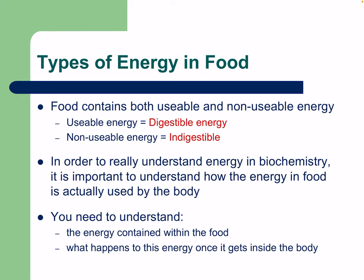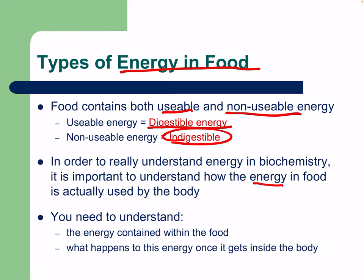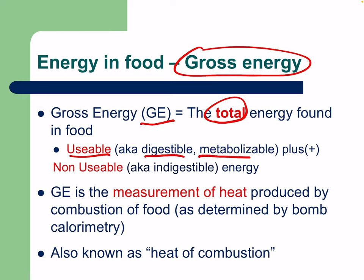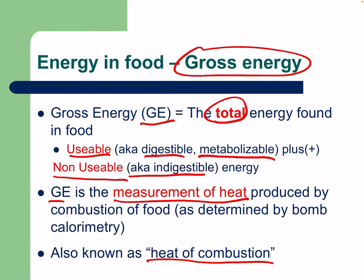Food contains both usable and non-usable energy. Usable energy is digestible energy; non-usable is indigestible. Gross energy (GE) is the total energy found in food — both usable and non-usable combined. GE is measured as heat produced by combustion of food via bomb calorimetry, also known as heat of combustion. In fact, all the energy in something like a box of cereal could theoretically be released at once as an explosion — our digestive system just releases it very slowly.